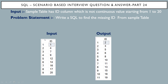First, the input table. We have a sample table with only one column called the ID column, and it has values ranging from 1 to 20. But the values are not continuous — we have some missing values for this ID column. The problem statement is: write a SQL query to find the missing IDs from the sample table. We have to find all the missing IDs between 1 and 20 and show them as output.